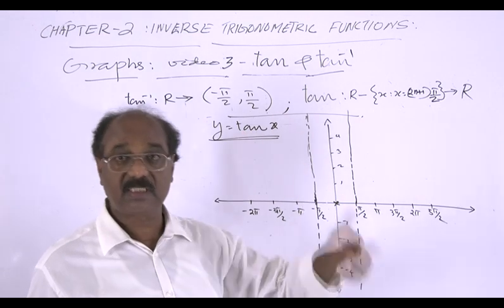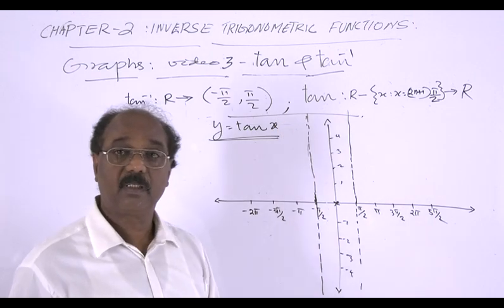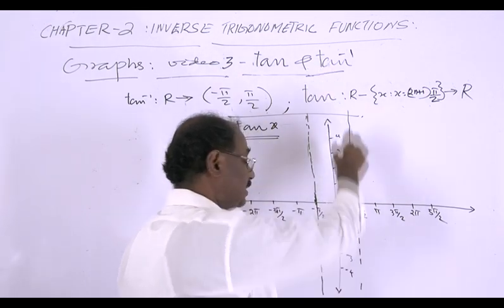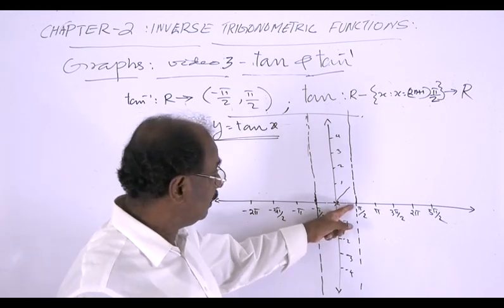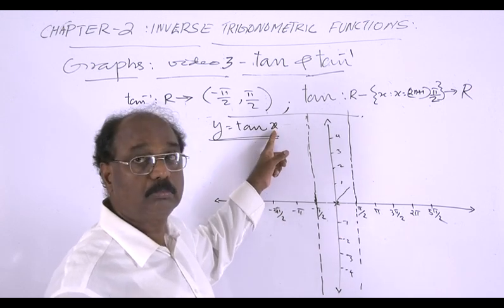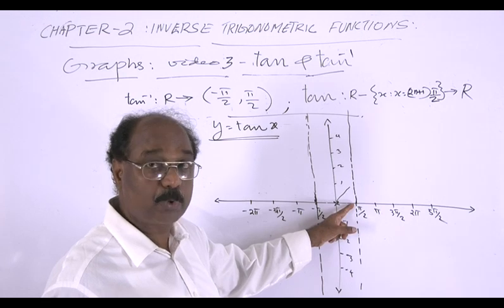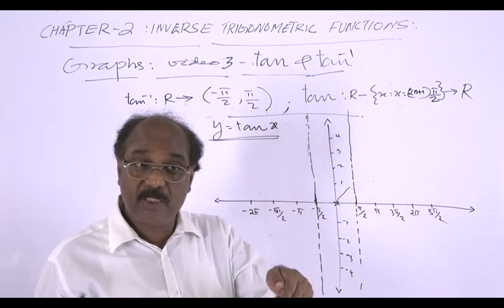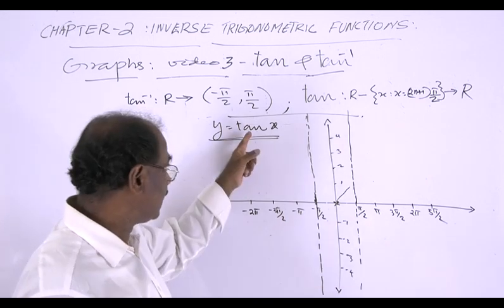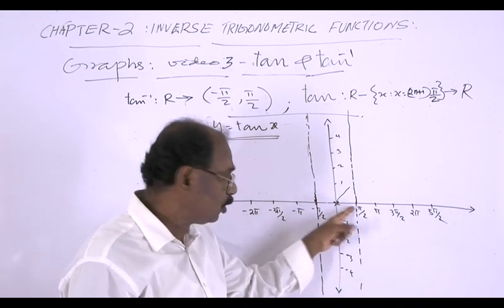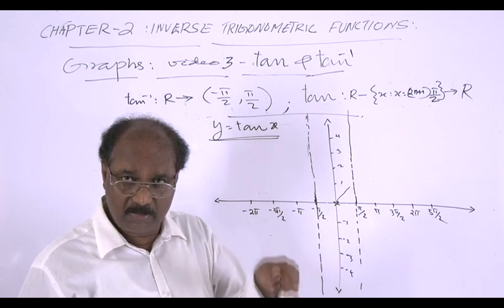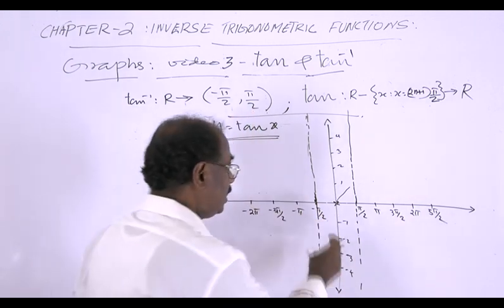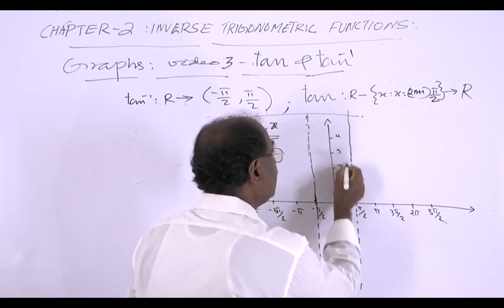The tan function is an increasing function — as x increases, y also increases. As x approaches π/2 (but never equals π/2, since π/2 is excluded), tan(x) equals sin(π/2)/cos(π/2), which is nearly 1/0, approaching infinity. So as x approaches π/2, y approaches infinity.